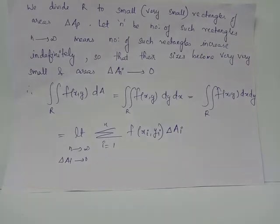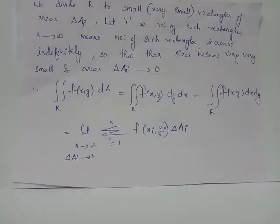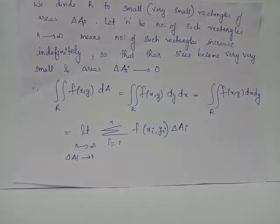Particularly, f of x1 y1 is defined for area delta A1, f of x2 y2 is defined for area delta A2, and so on. Just like we obtained the definite integral a to b f of x dx equals limit n tends to infinity, summation i from 1 to n, f of xi multiplied by delta xi, here we have the double integral over R of f of xi yi multiplied by delta Ai.